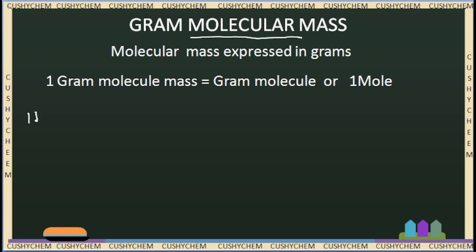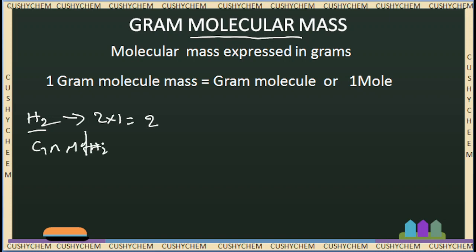Now we will use gram molecular mass. For example, we have hydrogen gas. If we have two hydrogen atoms, the molecular mass of hydrogen gas will be 2. So gram molecular mass of hydrogen is 2 grams.